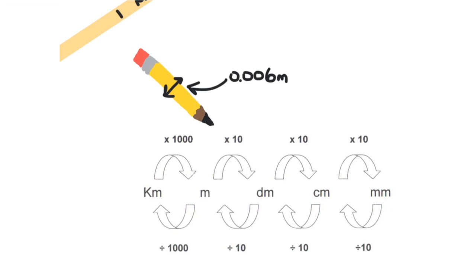To use dimensional analysis to convert a unit, first write the given quantitative observation. Include the number and the unit. Multiply by a conversion factor that includes the old unit and the new unit. To convert from meters into millimeters, we'll use the conversion factor that compares millimeters to a meter. There are 1,000 millimeters in one meter. So, 0.006 meters times 1,000 millimeters per meter gives 6 millimeters.